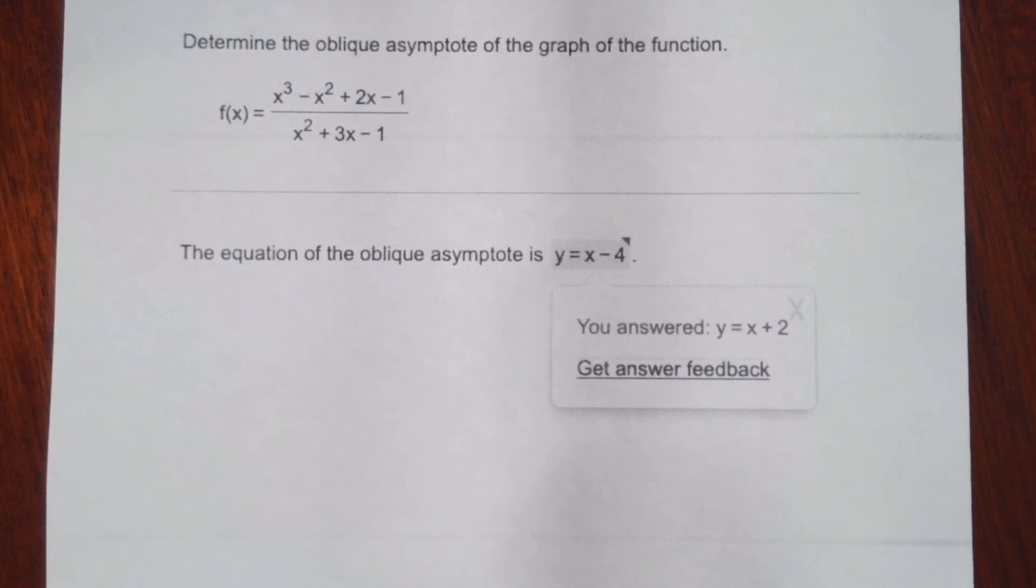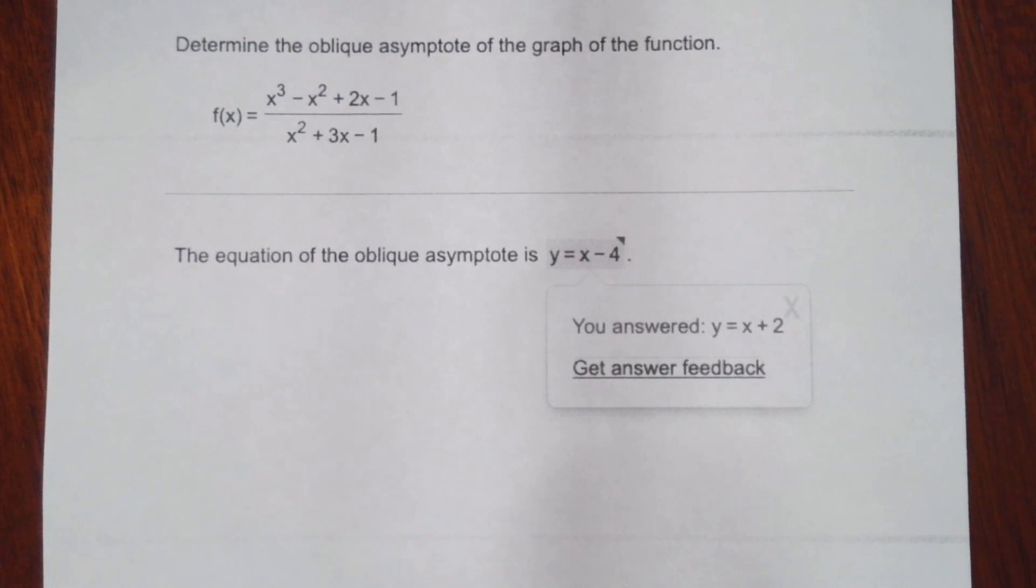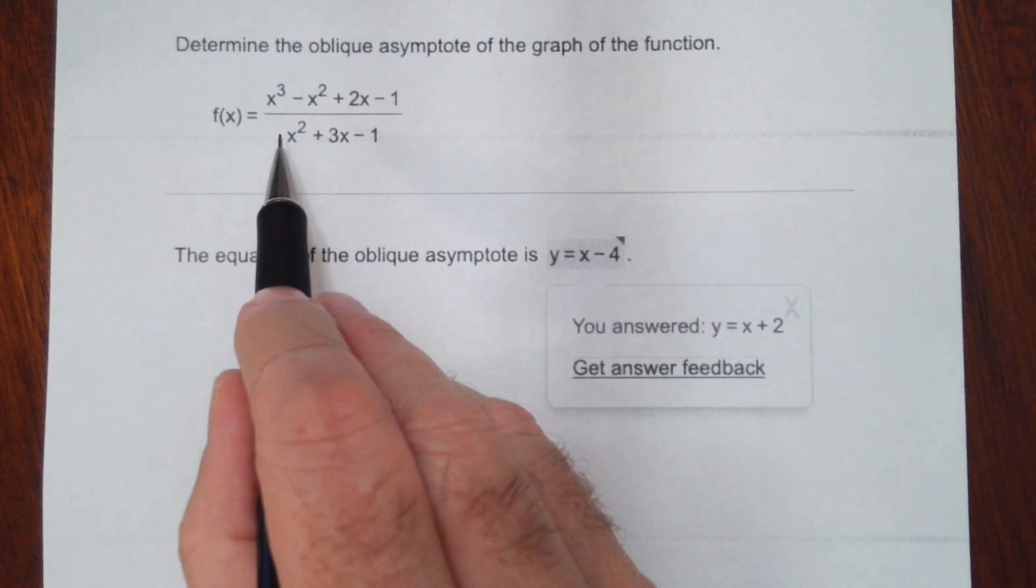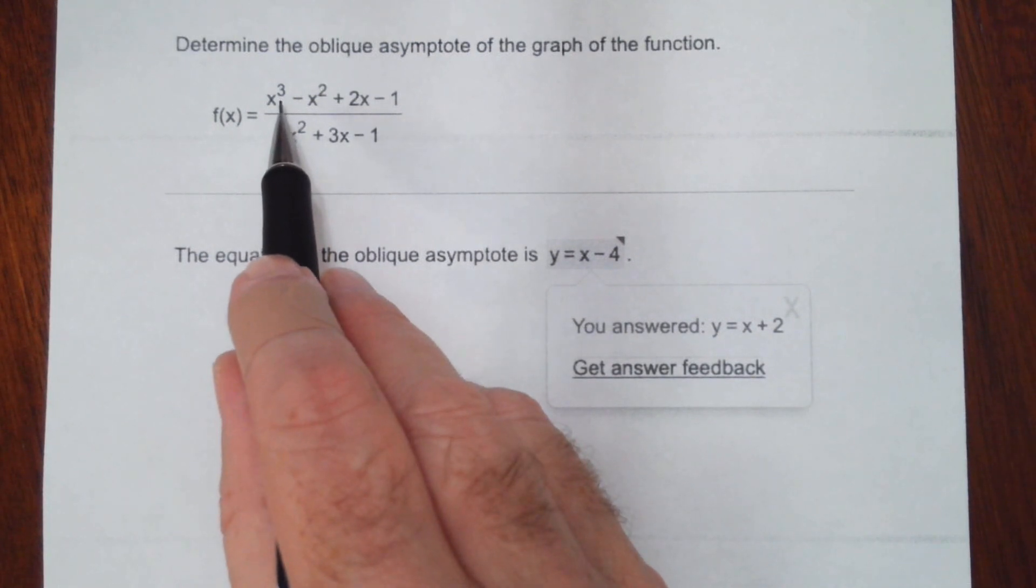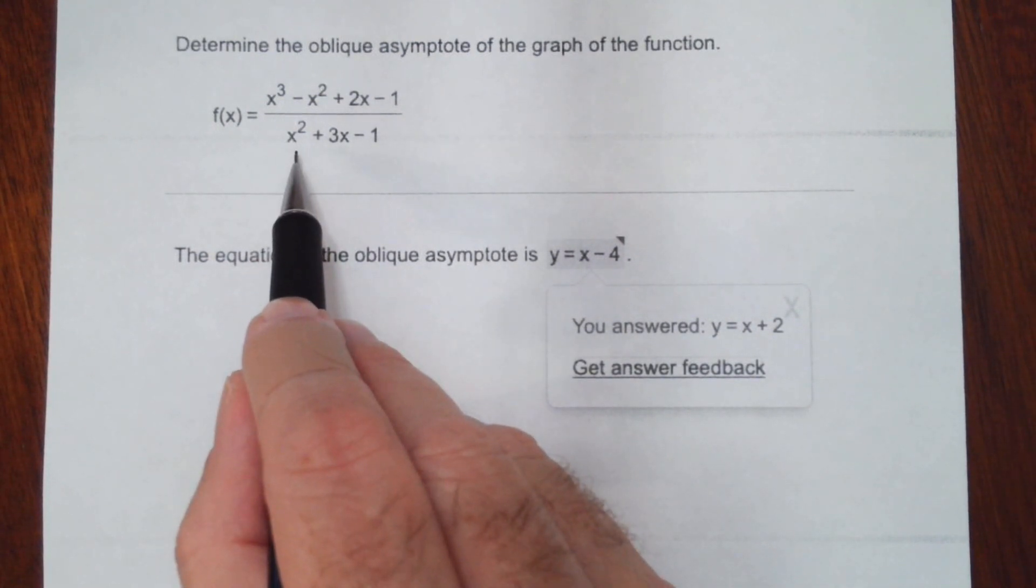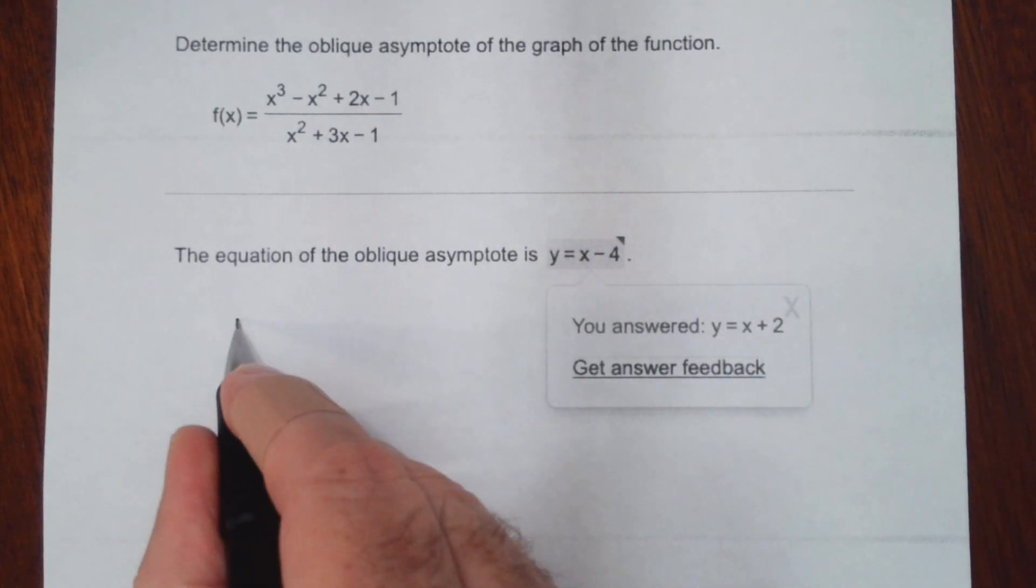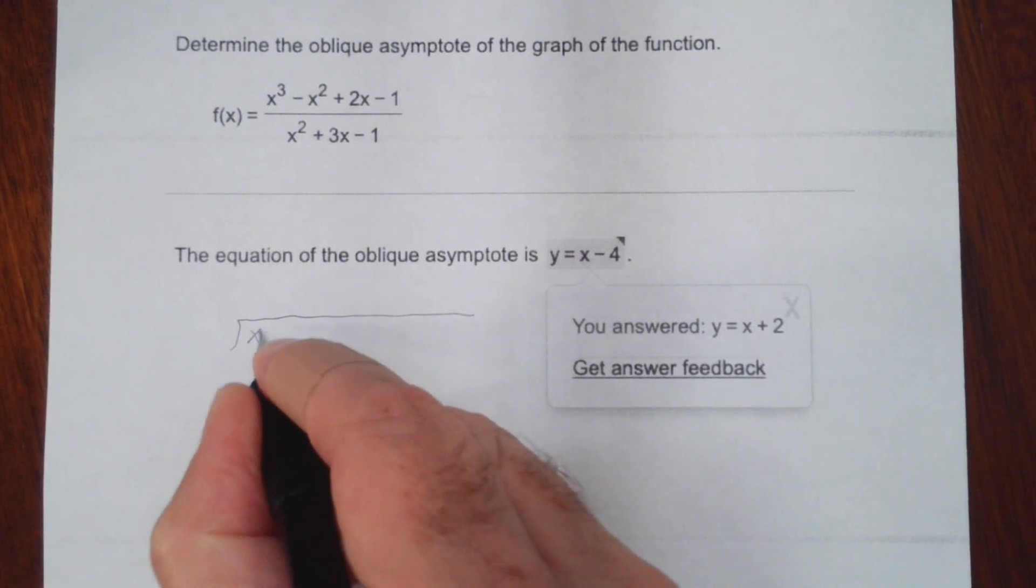In this video I'll show you how to find the oblique asymptote for this function. First of all, we know it has an oblique asymptote because the degree of the numerator is greater than the denominator. And to find it, we're just going to do long division. So let's go ahead and set it up.